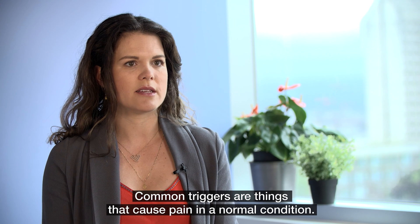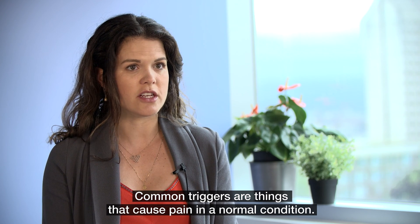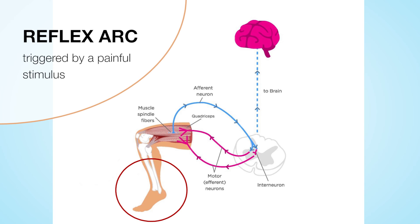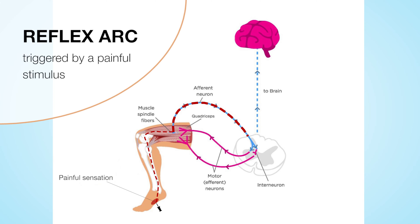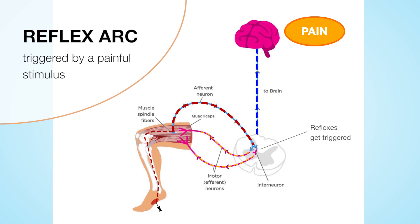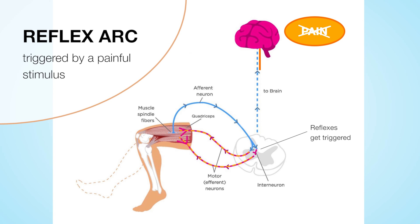Common triggers are things that cause pain under normal conditions. For example, if you're walking and you step on something sharp, a painful sensation would travel up the nerves from the foot into the spinal cord and up to the brain, where it'd be perceived as pain. In the meantime, reflexes get triggered — one leg extends to support you while the other flexes to pull your foot away. But it's a short-lived reflex in someone with normal spinal cord and brain function, because the brain sends a message down to tell those reflexes to calm down.